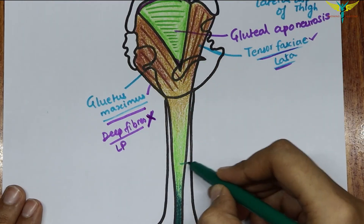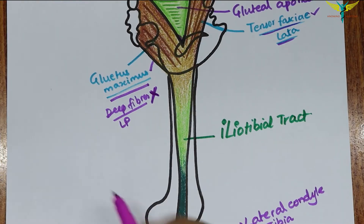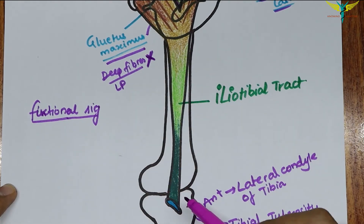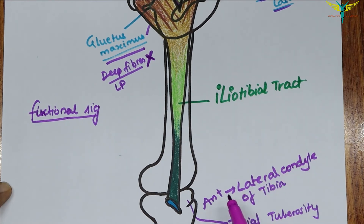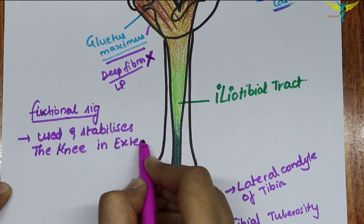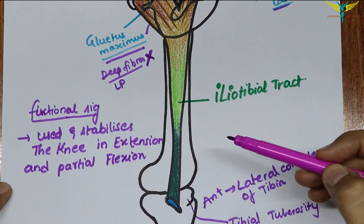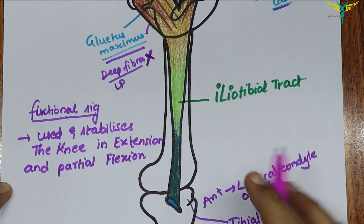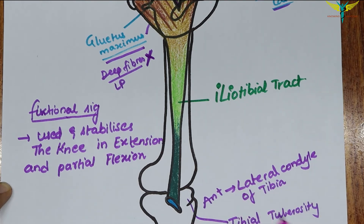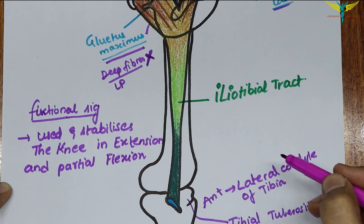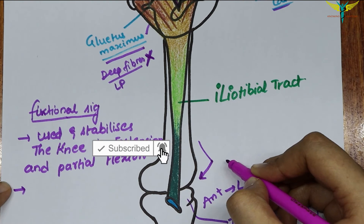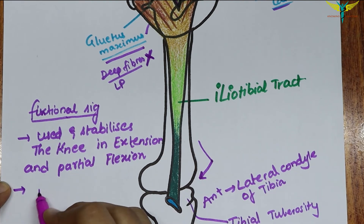The functional significance of the iliotibial tract is that it stabilizes the knee in both extension and partial flexion, and is used constantly during walking and running. On leaning forward with slightly flexed knees, the iliotibial tract is the main support of the knee against gravity, preventing the individual from falling forward.